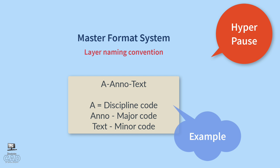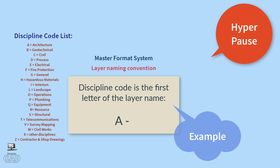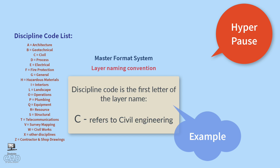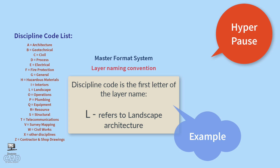Let's take a pause to explain the use of the Master Format Layer Naming Convention. The National CAD Standard, NCS, endorsed by the American Institute of Architects, has put forth guidelines for AutoCAD layer naming. Voluntary adherence to these standards helps ensure consistency among AutoCAD files. Each layer is named using a discipline code, which designates the layer information for the building trade it references. The discipline code for architectural elements is 'A,' interior design layers use 'I,' civil engineering uses 'C,' and landscape architecture uses 'L.'